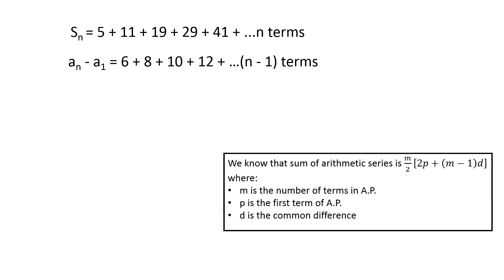We know that the sum of the arithmetic series is m by 2 times 2p plus m minus 1 into d, where m is the number of terms in AP, p is the first term of AP, and d is the common difference between consecutive terms. In the present case, m equals n minus 1, p equals 6, and d equals 2.